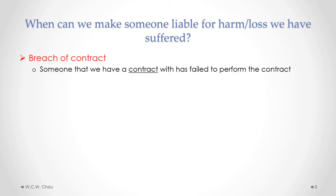In a previous module, we've looked at contracts — specifically how contracts are formed, and once they are formed, how a breach of contract occurs. That's when someone that we have a contract with has failed to perform one or more terms of that contract. If there is a breach of contract, the innocent party has a right to sue for the losses or damages that arise from that breach.